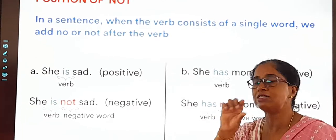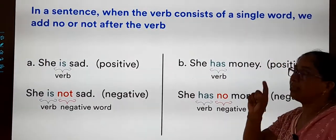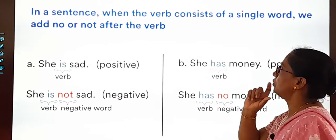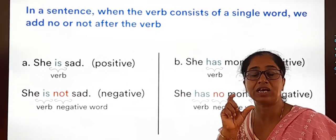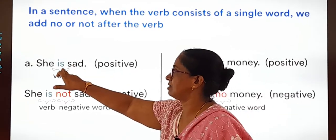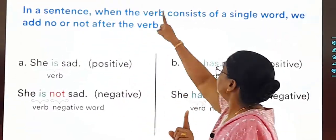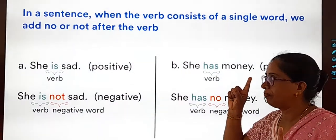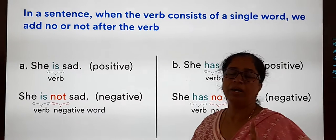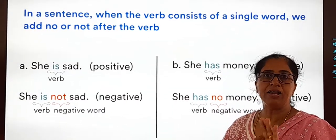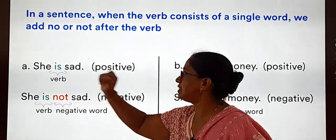Where should we position 'no' and 'not' in a sentence? When the verb consists of a single word — for example, 'She is sad' — the verb is 'is', which is a single word. Whenever a sentence has a single verb word, after the verb you add 'not' or 'no'. So 'She is sad' becomes 'She is not sad'.